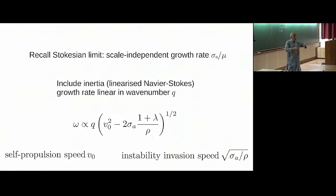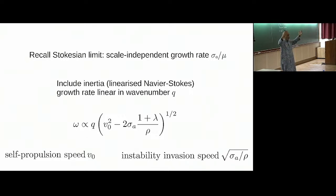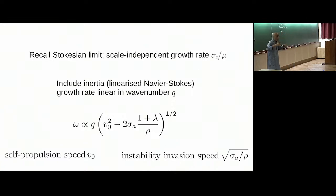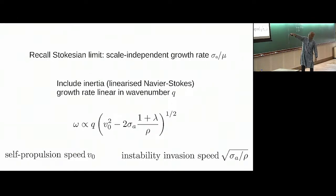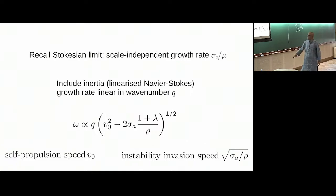The bigger the scale, the longer disturbances on that scale take to grow. Once you take inertia into account, the instantaneous Newtonian gravity-like response now has a lag, and you get a meaningful competition. In the zero-density limit this coefficient becomes infinity and the growth is instant. At order q there is a competition between the disturbance running at the motility speed and the disturbance trying to reach order 1 on that length scale.